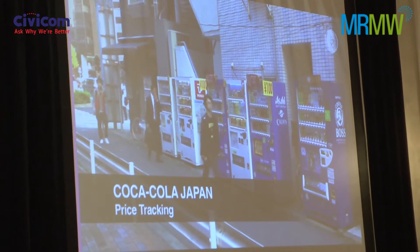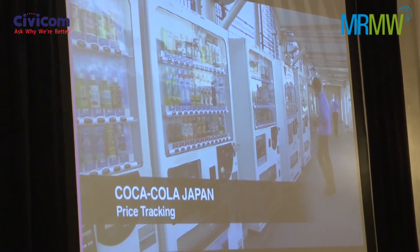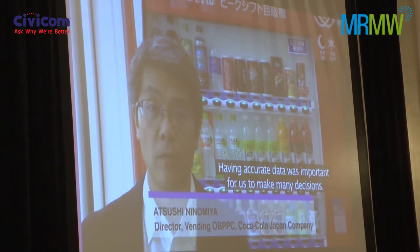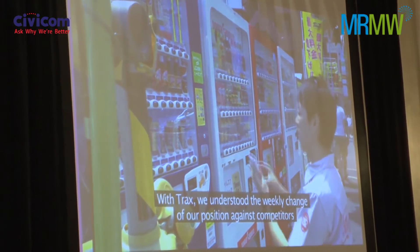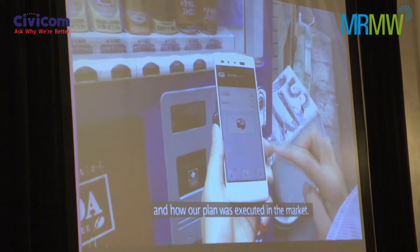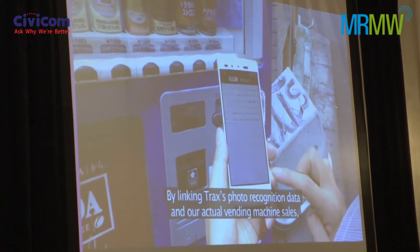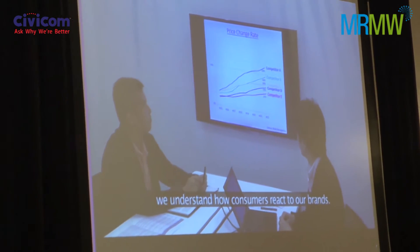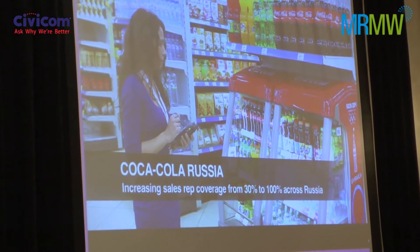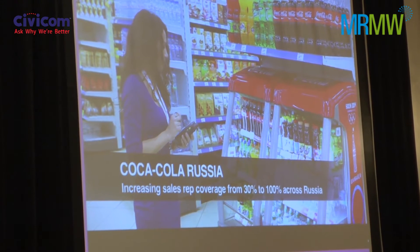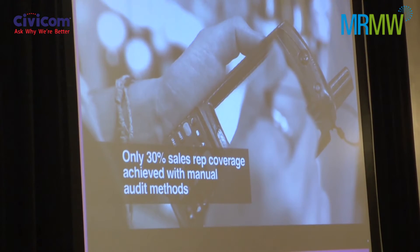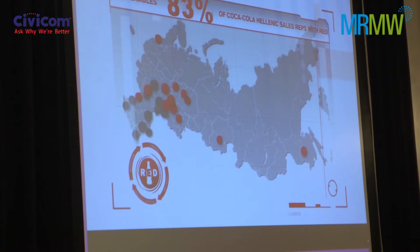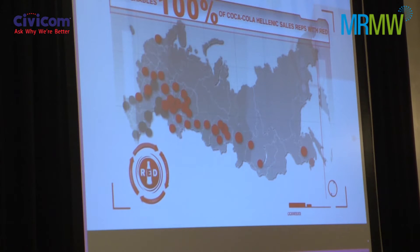In Japan, Coca-Cola faced the challenge of tracking and managing price alignment and promotional pricing for their own and competitor products. With Trax, they understood the weekly change of their position against competitors and how their plan was executed in the market, linking photo recognition data with actual vending machine sales to understand how consumers react to their brands. In Russia, Coca-Cola Hellenic partnered with an external auditing company that could only execute 30% of their store coverage with manual audit methods. This year with Trax, they will achieve 100% sales rep coverage across Russia in the same amount of time and costs.